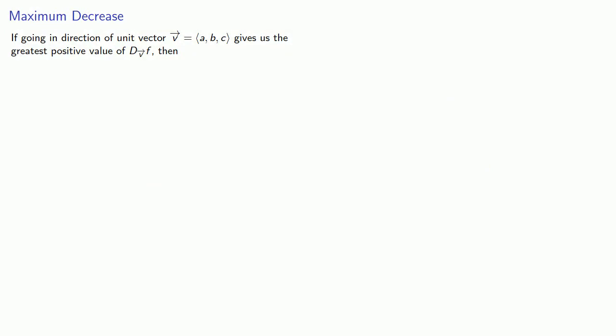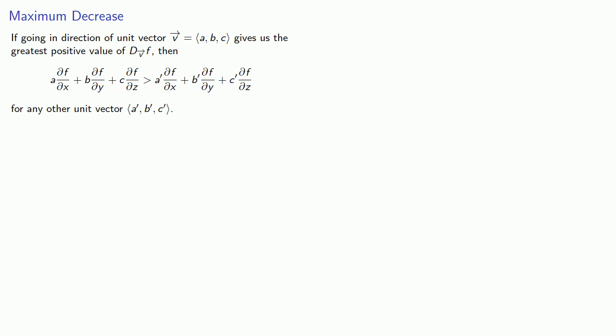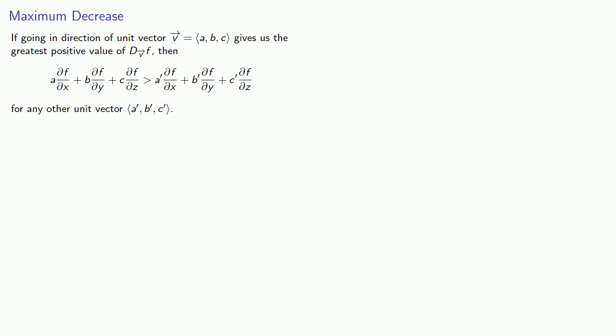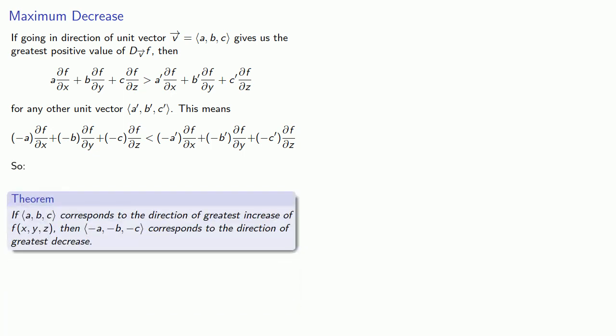If going in the direction of the unit vector (a, b, c) gives the greatest possible value of the directional derivative, then the directional derivative in that direction will be greater than for any other unit vector (a′, b′, c′). If we multiply through by negative 1, this reverses the inequality, meaning that going in the opposite direction gives the smallest directional derivative. So if (a, b, c) is the direction of greatest increase, then (−a, −b, −c) is the direction of greatest decrease.